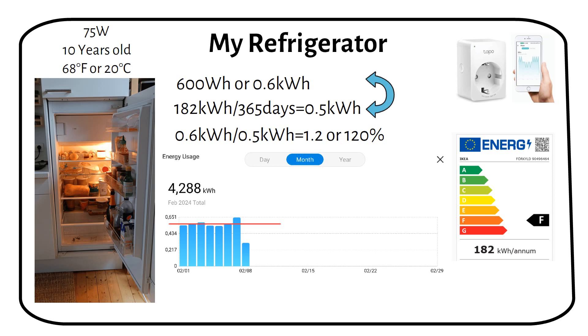We apply a straightforward calculation for a duty cycle to understand how often the fridge operates within a 24 hour cycle. By dividing the daily consumption, which is 600 watt hours, by the rated power of 75 watts, we find that the fridge runs for a total of 8 hours a day. Consequently, the duty cycle is determined to be approximately 33%. Very close to the expected result.